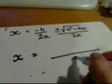And our final step is a little bit of tidying up. So the left-hand side will be x. On the right-hand side, we've got a common denominator, which is 2a. So we can put the whole lot over 2a.